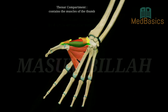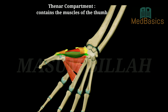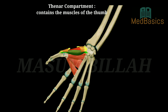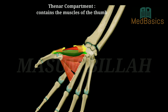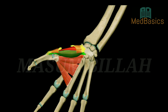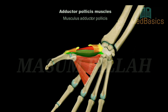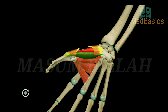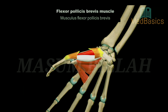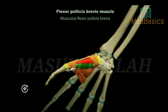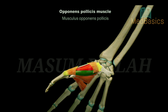Thenar compartment. The thenar musculature consists of four short muscles located on the lateral aspect of the hand: abductor pollicis brevis, adductor pollicis, flexor pollicis brevis, and opponens pollicis.